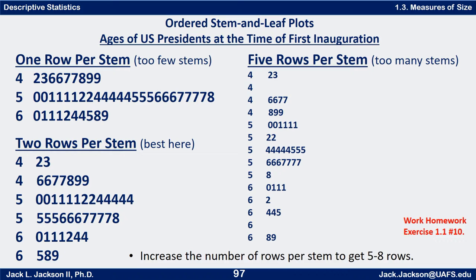Usually you start with just one row per stem and divide it down further if there are too many things per stem and not enough rows. With only three rows here, the groups are kind of too big. With two rows per stem this works out pretty well — we have six groups, which is a pretty good number. You want to shoot for maybe somewhere between five and eight rows. The five-rows-per-stem version is probably too many — there are some zero rows, and that's probably too many rows.